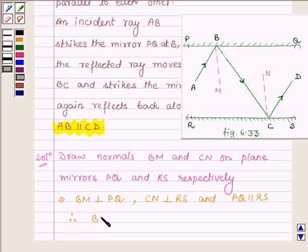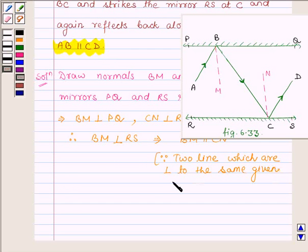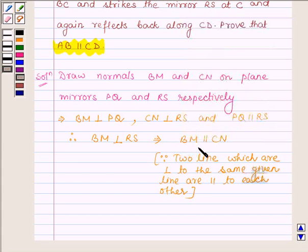Therefore BM is perpendicular on RS and this implies that BM is parallel to CN, since two lines which are perpendicular to the same given line are parallel to each other. And here BM and CN are perpendicular to the line RS, therefore these two lines are parallel to each other and hence we have BM parallel to CN.